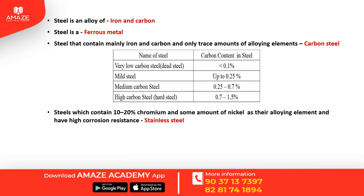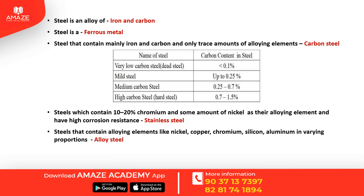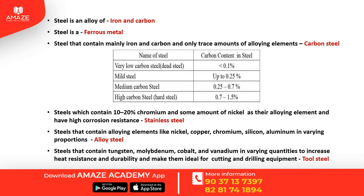Stainless steel contains 10–20% chromium and some amount of nickel, and it has very high corrosion resistance. Alloy steel contains alloying elements like nickel, copper, chromium, silicon, aluminum, etc. in varying proportions. Tool steel contains tungsten, molybdenum, cobalt, and vanadium in varying quantities to increase heat resistance and durability, making them ideal for cutting and drilling equipment.